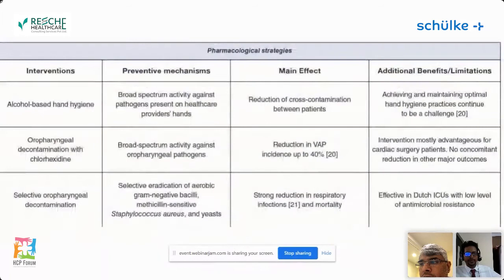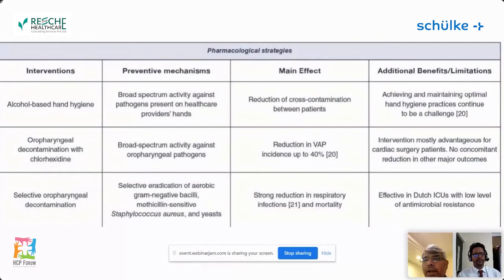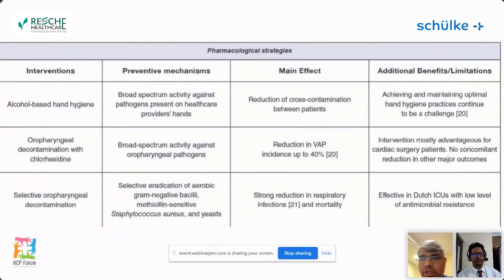Continuous monitoring and control of ETT cuff pressure helped reduce aspiration of bacteria from oropharyngeal secretions, resulting in nearly 50 percent reduction in VAP incidence. Alcohol-based hand hygiene for all care of ventilated patients — just as it has reduced CLABSI, CAUTI and other hospital infections — also impacts VAP. Oral decontamination with chlorhexidine reduced oropharyngeal bacterial flora and VAP, with maximum benefit demonstrated in cardiac surgery patients.